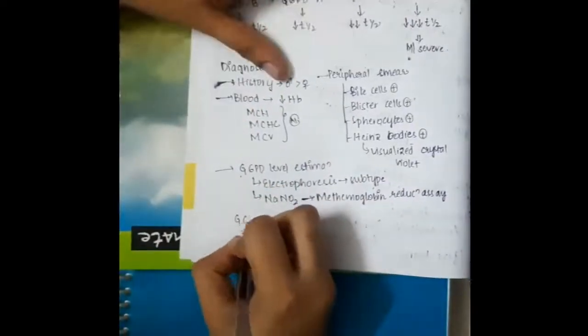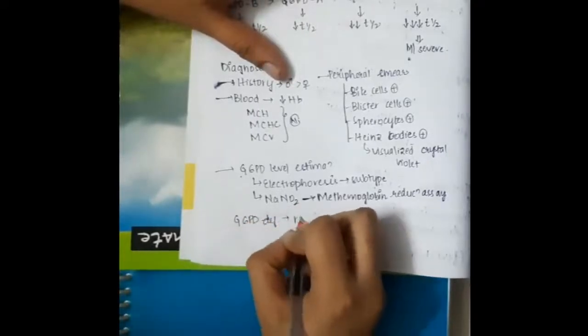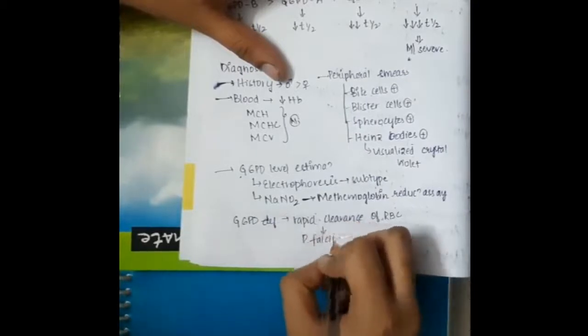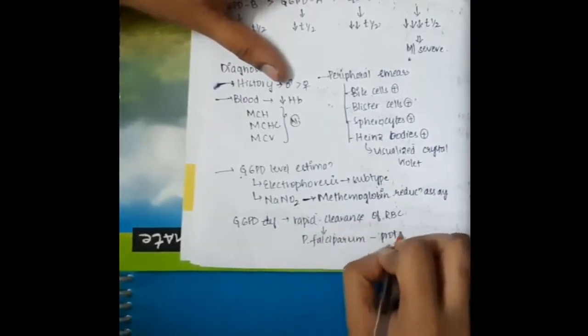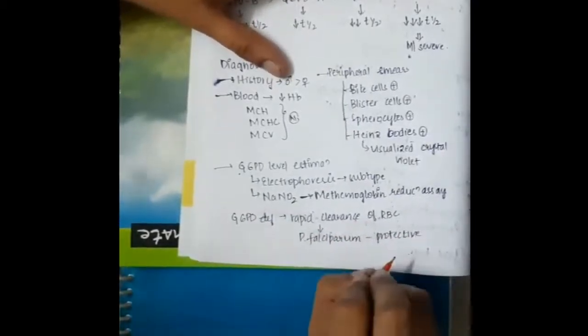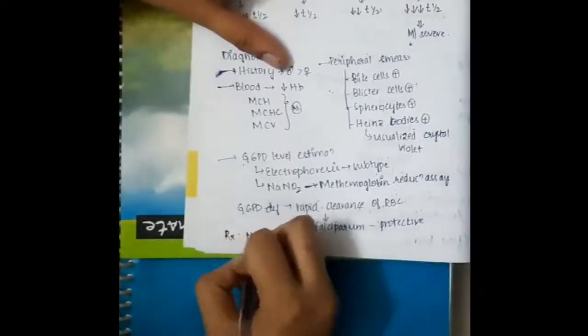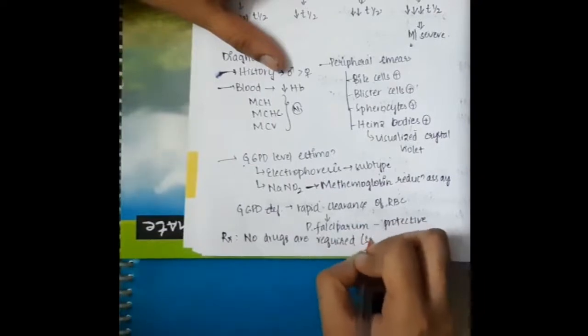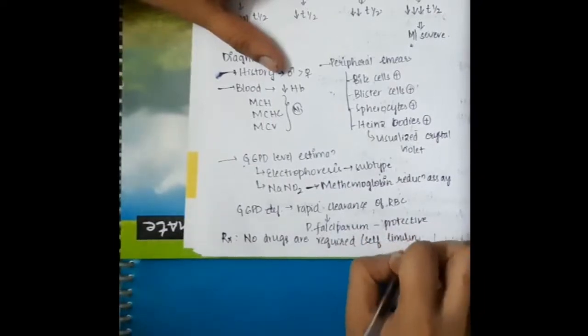Whenever in patients with G6PD deficiency, they are resistant to falciparum malaria infections. Because even if plasmodium falciparum infects the RBCs, those RBCs are rapidly cleared by the body, thus causing no infection.